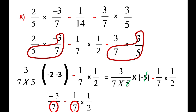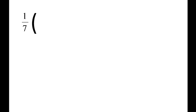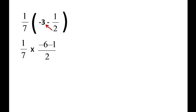Here 7 is common in the denominator, so take 1/7 outside: 1/7×(−3 + (−1/2)). In the bracket, cross-multiplying: −3 becomes −6/2, so −6/2 − 1/2 = −7/2. Therefore 1/7×(−7/2). The 7 in numerator and denominator cancel, giving −1/2. Hope you would have understood the concept.